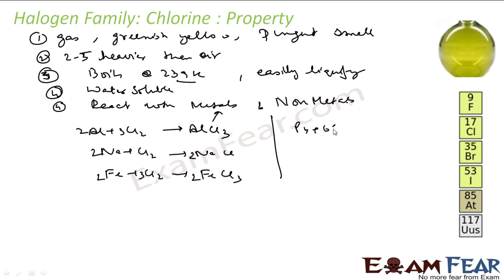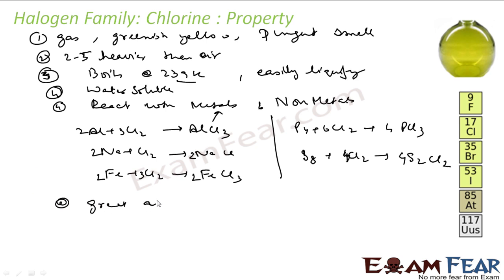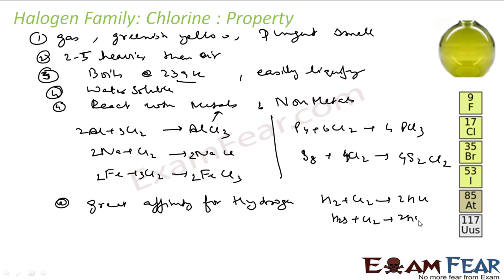For non-metals reactions: phosphorus reacts with chlorine to form PCl3/PCl5; sulfur reacts with chlorine to form SCl2. So chlorine reacts with both metals and non-metals. Chlorine also has great affinity for hydrogen — it reacts with hydrogen to form HCl, with hydrogen sulphide to form HCl and sulphur, and with hydrocarbons to form HCl and carbon.